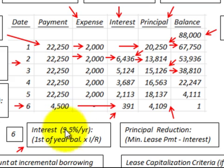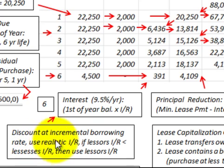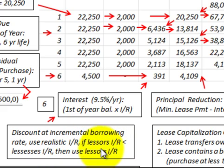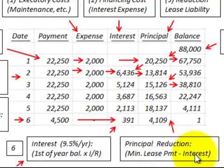The interest rate is 9.5% per year, based on the incremental borrowing rate of the lessee. If the lessor's interest rate is lower than the lessee's incremental borrowing rate, you use the lessor's rate. Interest expense equals the beginning-of-year balance times 9.5%. The principal reduction each year equals the minimum lease payment minus the interest expense for that year.